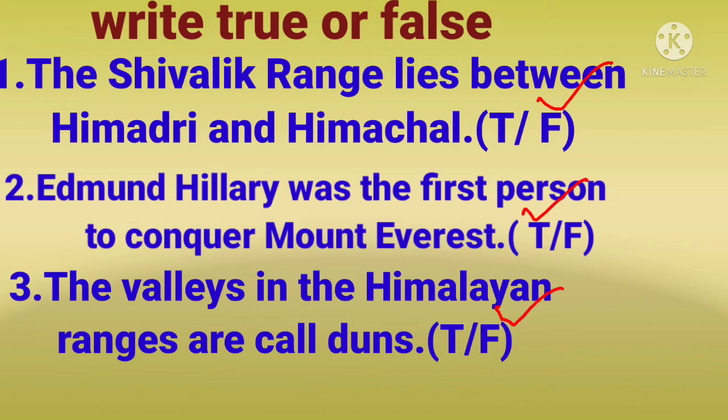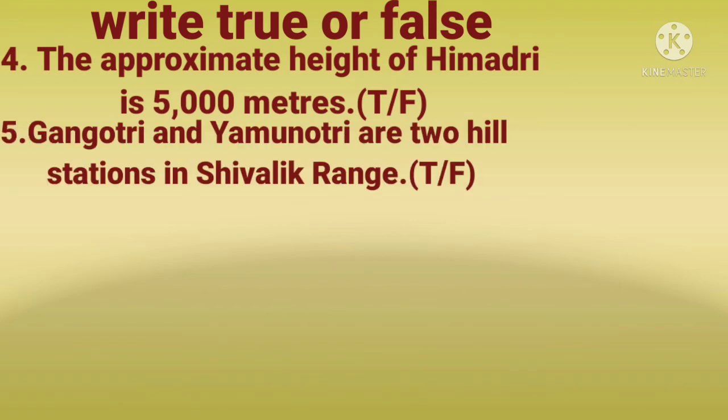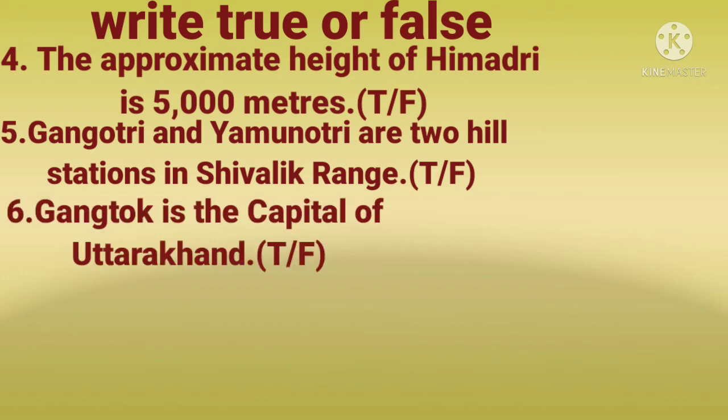Fourth one: the approximate height of Himadri is 5000 meters. Fifth one: Gangotri and Yamnotri are two hill stations in Shivalik range.